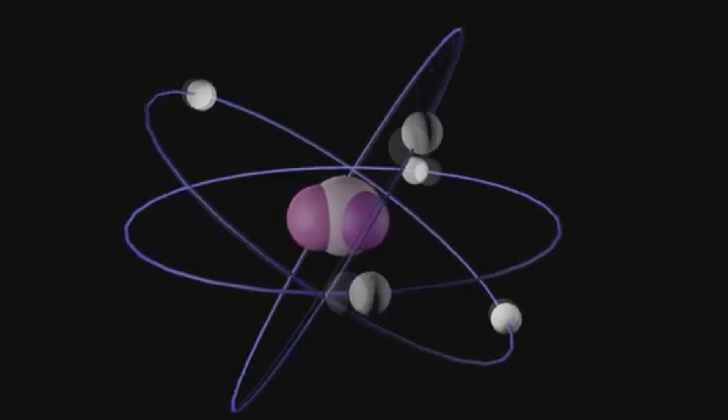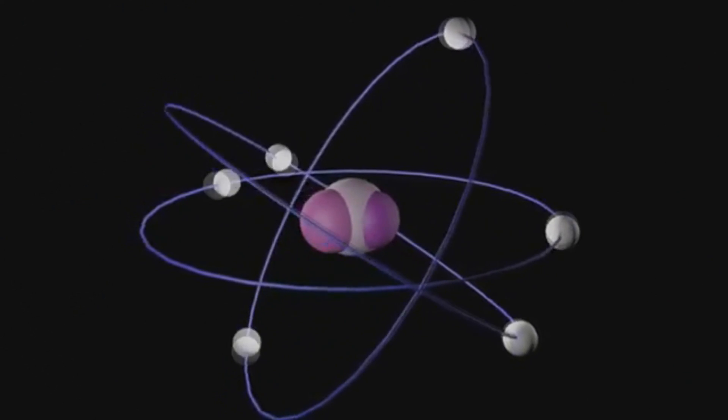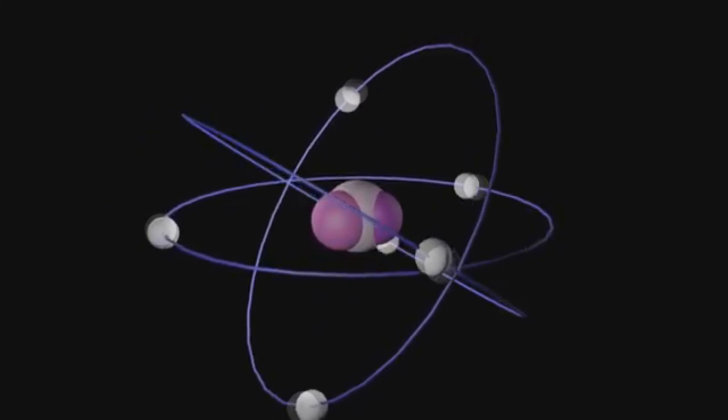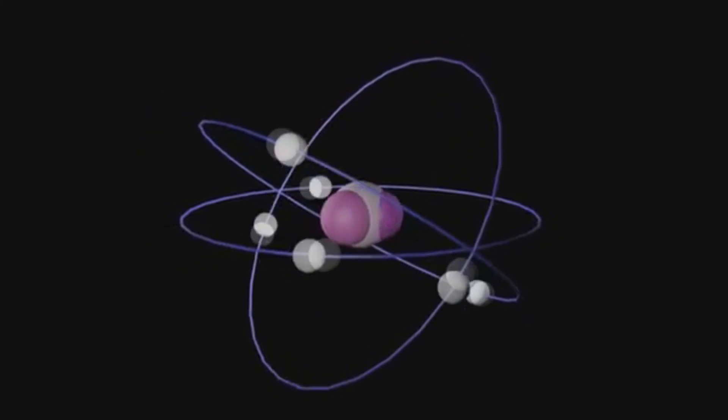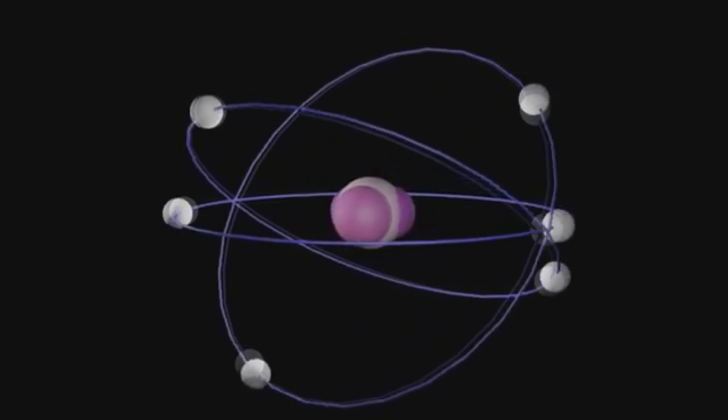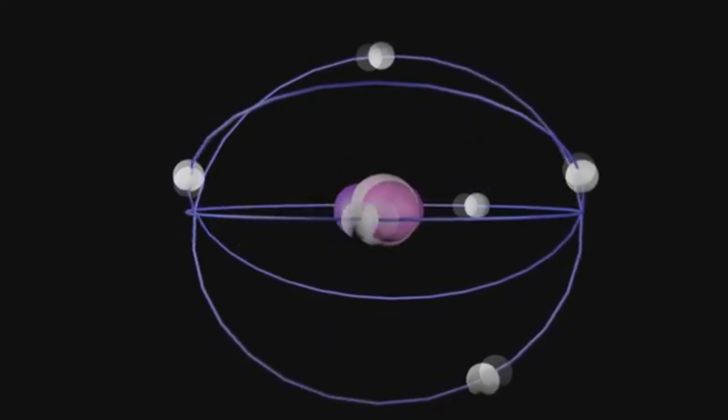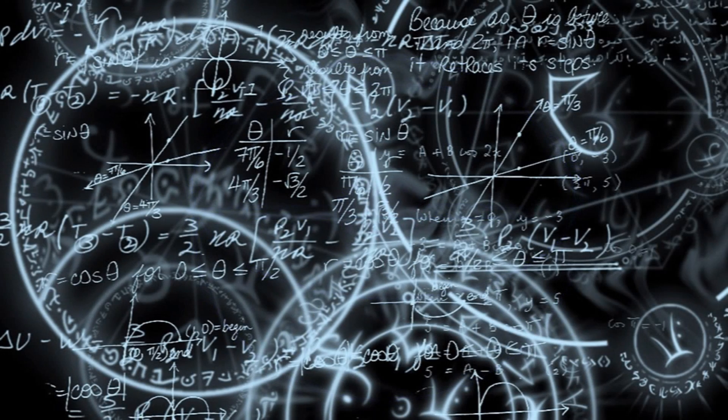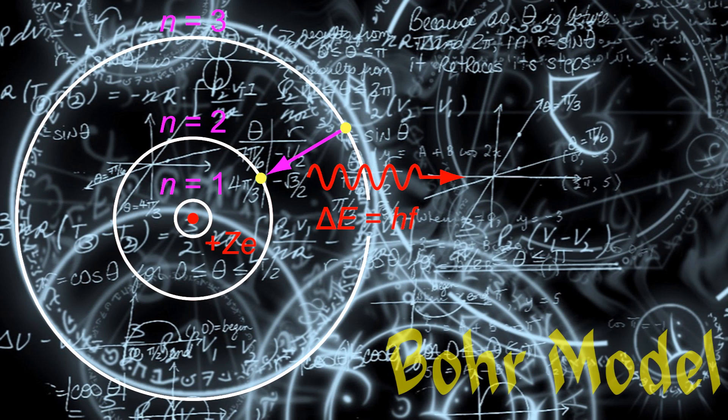This is an atom. Well, this is what an atom looks like. Well, this is just a representation of what we think an atom looks like. Well, this could get tiring, so I'll just tell you, this is the Bohr model, an early representation of the atom.